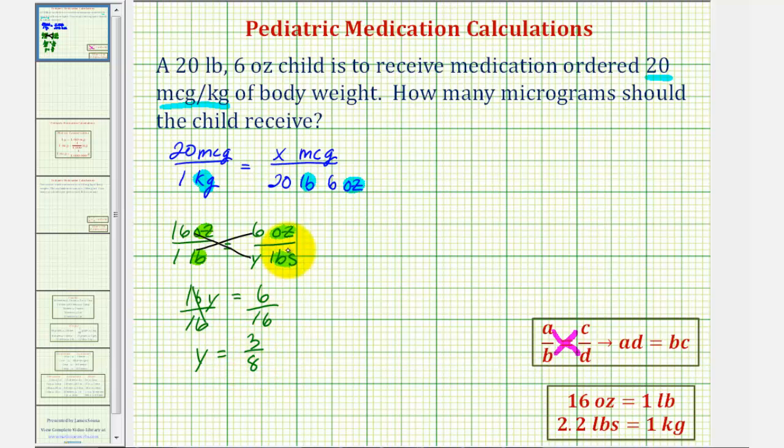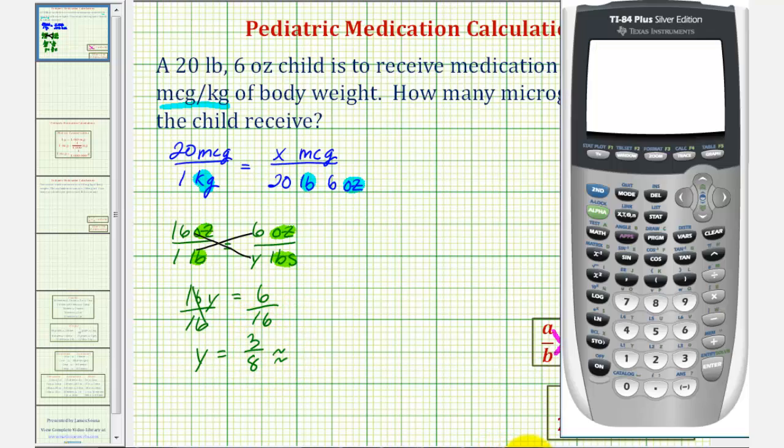But we do want to convert this to a decimal, and then we'll round to two decimal places. So to convert this to a decimal, we'll divide three by eight. Three divided by eight is zero point three seven five. If we want to round to the hundredth, or two decimal places, notice how this five here is our decision maker. Five or more we round up, four or less we round down. Because we have a five here, we round up by changing this to zero point three eight.